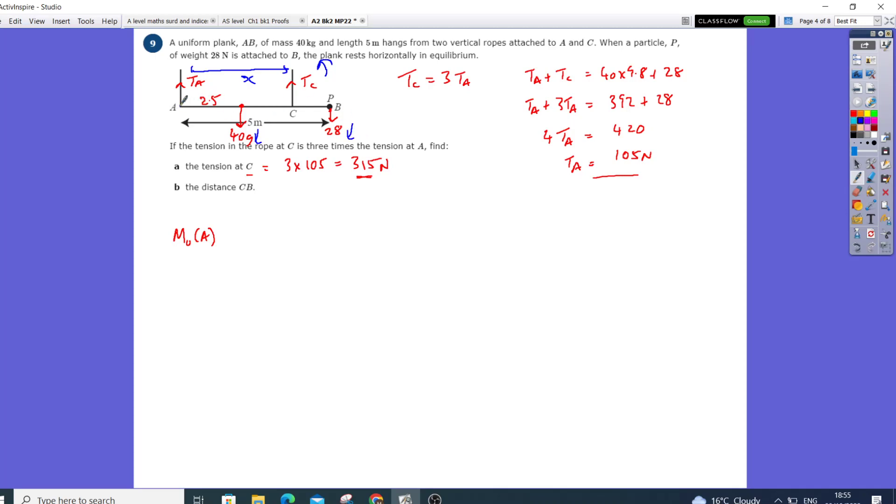This is going anticlockwise, this is going clockwise, and this is going clockwise from that pivot point. So we've got x times TC, where TC is 315, and that's going to be balanced with 40g, which is 392, multiplied by 2.5, plus 5 times 28.